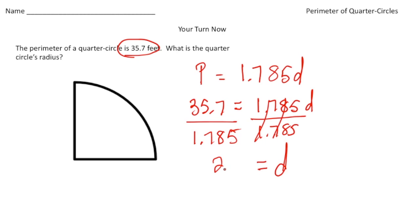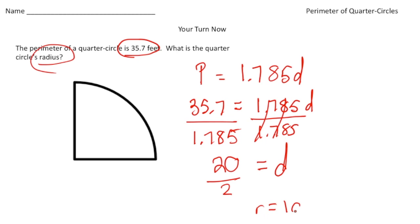We know the diameter is 20, but the question asks for the radius. Take 20 and divide it in half: 20 divided by 2 is 10. So the radius equals 10 feet. How did you do?